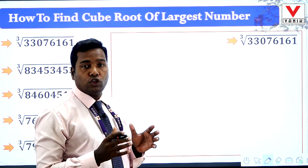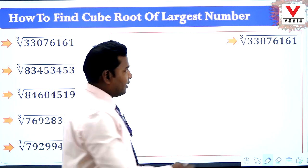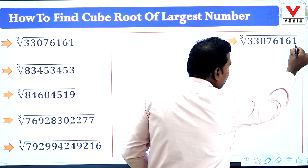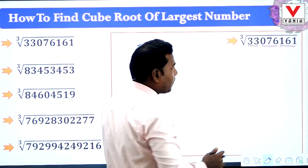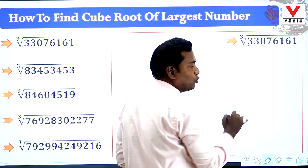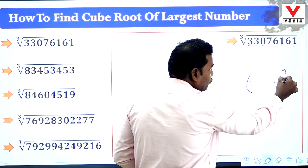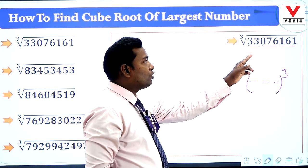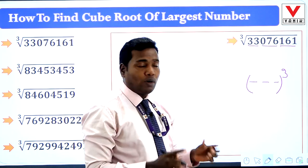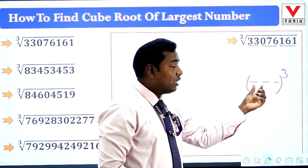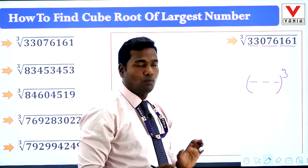For question number 33076161, first we make groups of numbers. In each group we select 3 numbers from the right side: 161 is one group, 076 is one group, and 33 is one group — that means 3 groups here. We know that a 3-digit number cubed is equal to this number 33076161.